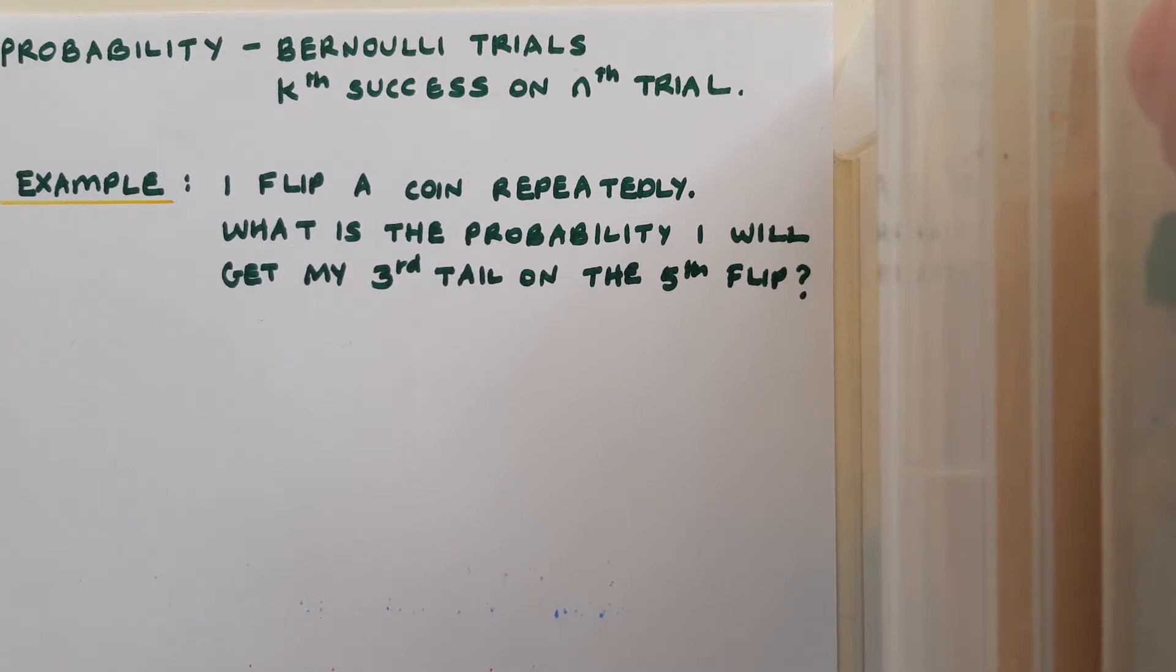So already we can see the similarity to Bernoulli trials that we've encountered previously in that we're looking for a certain number of successes in a certain number of trials. But this is a little bit more specific than the questions that we've encountered up to now because previously we wanted to have a certain number of successes in a certain number of trials, but we weren't worried about particular trials being successes or failures in themselves individually. That's the difference here. I specifically want the fifth flip to result in my third tail.